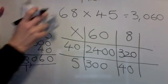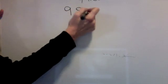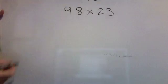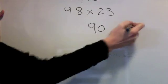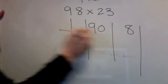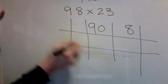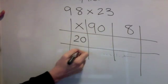We'll try one last one and then you can have a go. 98 times 23. 90 and 8 in a grid. Times by 20 and 3.